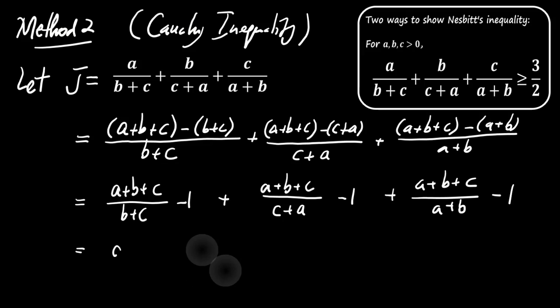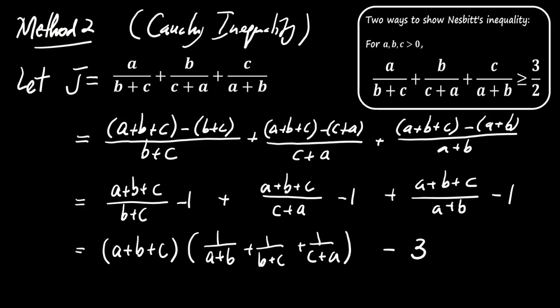Now, we factor out A plus B plus C, giving us J equals A plus B plus C times 1 over B plus C plus 1 over C plus A plus 1 over A plus B minus 3.